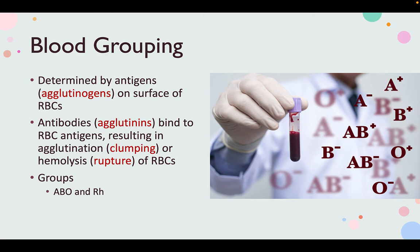The plasma membrane of our red blood cells has special glycoproteins. These glycoproteins differ among individuals because they can be seen as foreign by other blood types. These glycoproteins are called antigens or agglutinnogens, and there are up to 50 different antigens on a person's red blood cells.